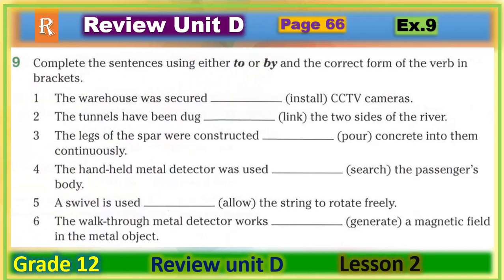Now please go to Exercise 9, page 66: complete the sentences using either 'to' or 'by' and the correct form of the verb. Remember: 'to' must be followed by the infinitive — the base form of the verb without any endings — but 'by' must be followed by the gerund, that is the verb plus -ing.